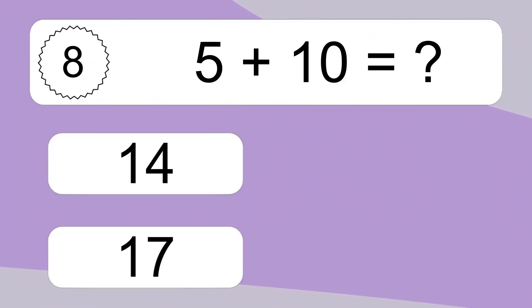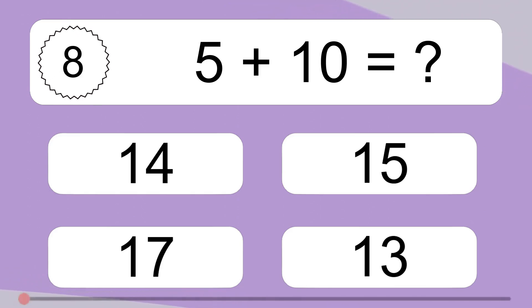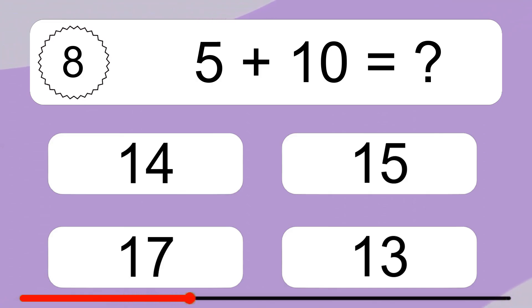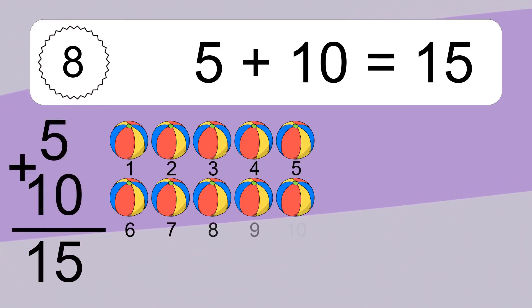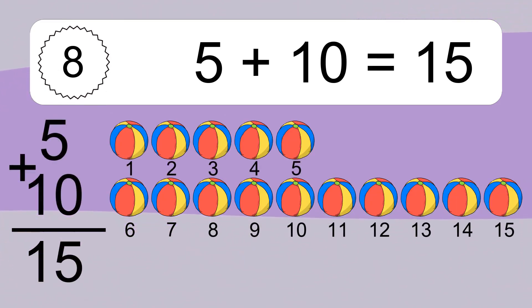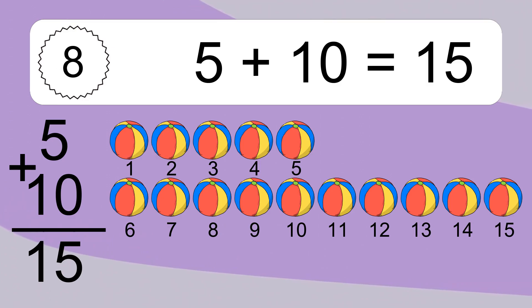5 plus 10 equals what? 5 plus 10 equals 15. Let's count it: 1, 2, 3, 4, 5, 6, 7, 8, 9, 10, 11, 12, 13, 14, 15.